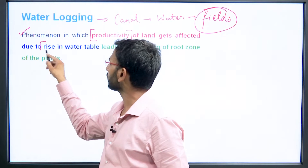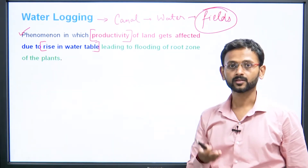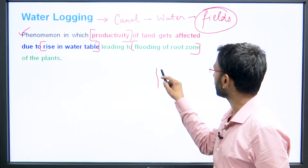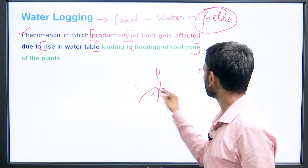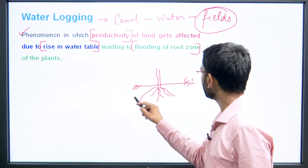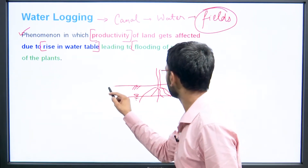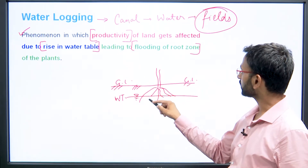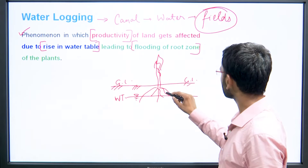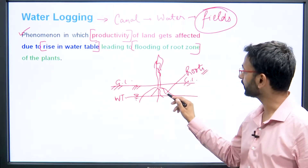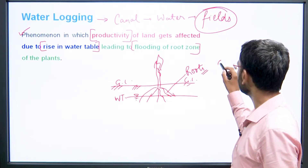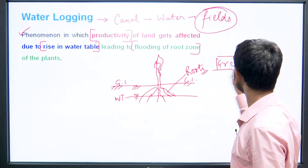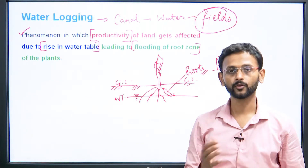Water logging can also lead to a rise in the water table — a big problem if water is more than the required quantity — leading to flooding of the root zone. If this is the plant and this is the root zone below the ground level, and the water table rises here, the roots of the plant will have no space to breathe. If the breathing problem is there for the roots, then plant growth will be hampered.